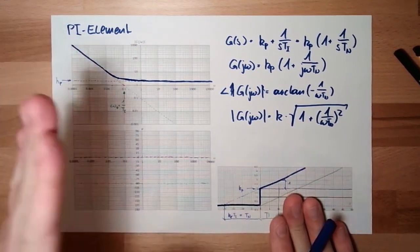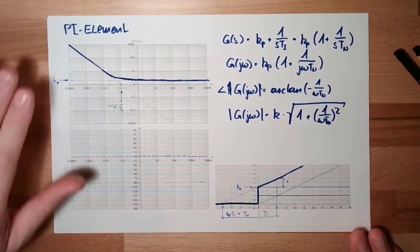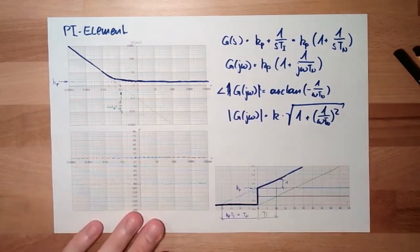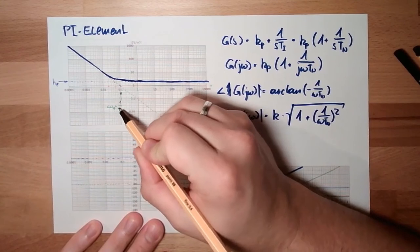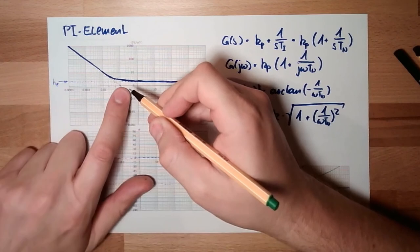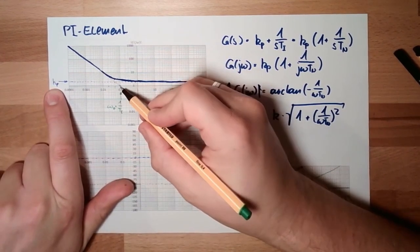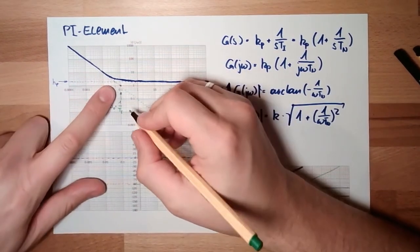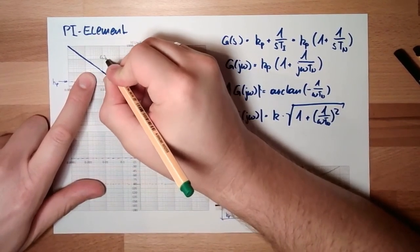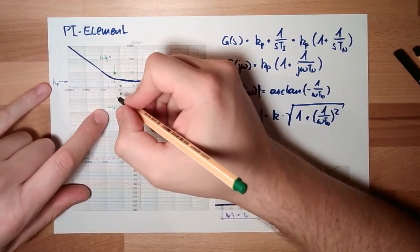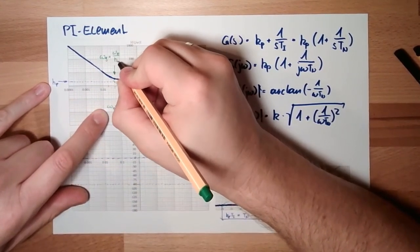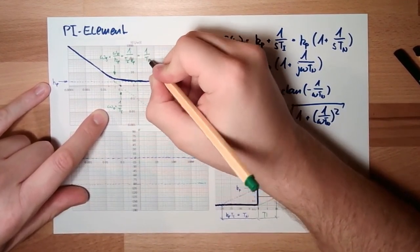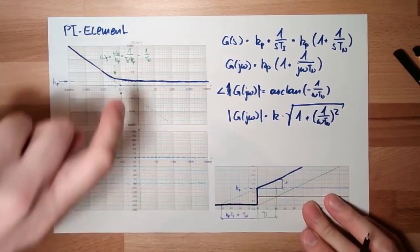So at low frequencies it looks like an i element, and at high frequencies it looks like a p element. Here at this band: at frequency 1/ti we are at amplitude 1; to get to kp, the frequency must be a factor of kp lower, so this new frequency omega_g is omega_d divided by kp, which is 1 divided by ti·kp, and this is 1 divided by tn. Here we have again tn as this transition band.